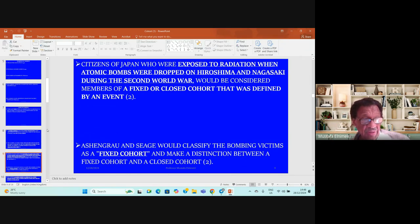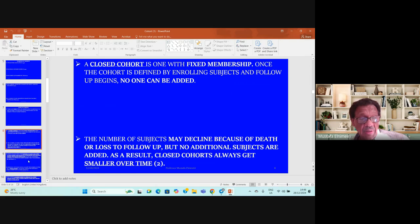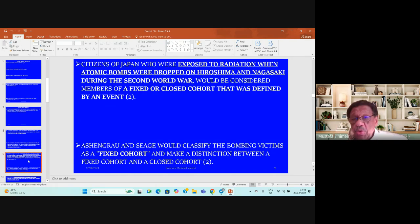The citizens of Japan who were exposed to radiation when atomic bombs were dropped in Hiroshima and Nagasaki during the Second World War would be considered members of a fixed or closed cohort defined by that event.